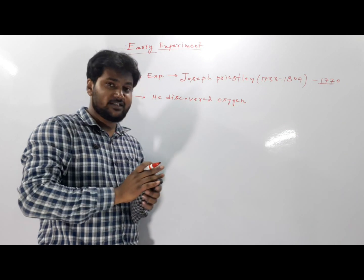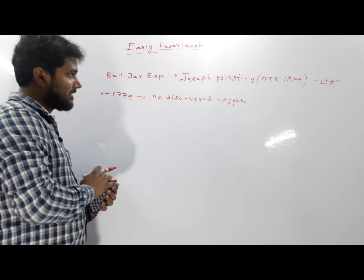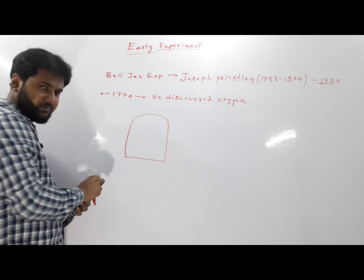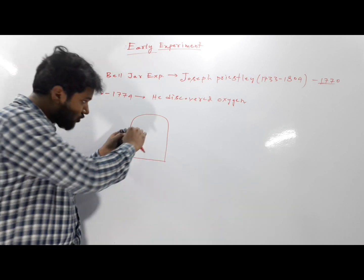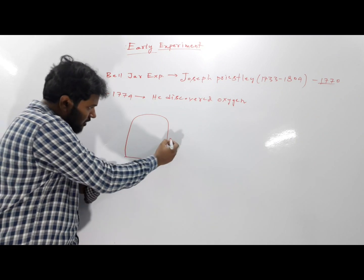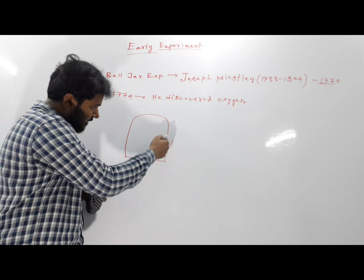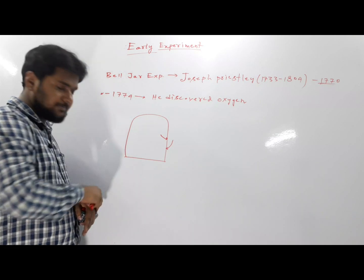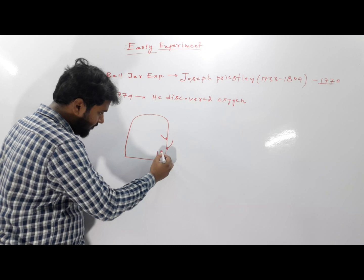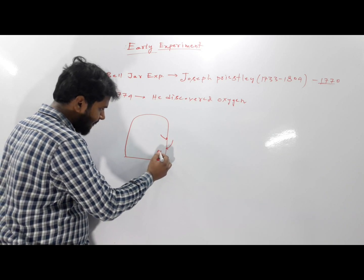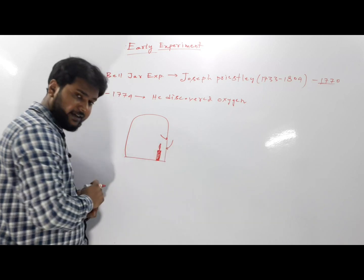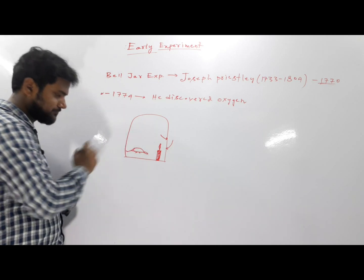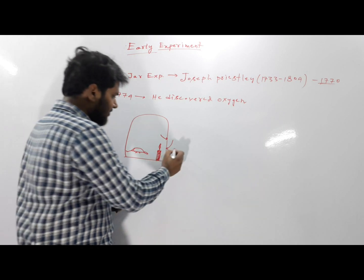In 1770, oxygen was not yet discovered. He took one bell jar — the significance of this bell jar is that it is a closed space, totally airtight. No air can come in, and nothing inside can go out. Inside this bell jar, he kept one burning candle and one alive mouse.